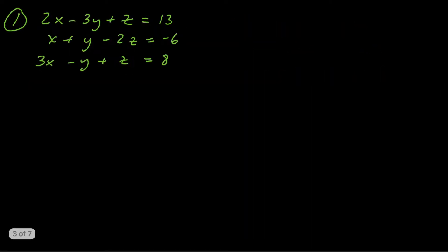This first problem — you can see we've got three variables, three equations. We're going to use the elimination method, but first we have to pick a variable that we want to eliminate. You either want to eliminate the x's first, the y's first, or the z's first. You want to try to pick one that's easiest, but it doesn't really matter ultimately which one you pick — you want to stick with that variable.